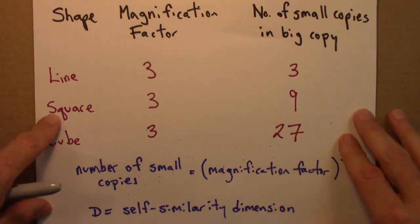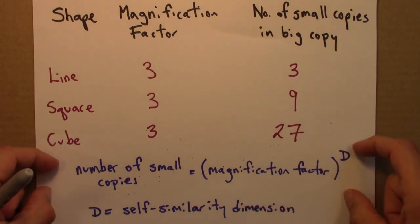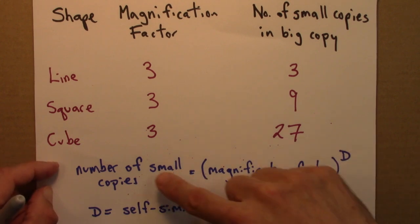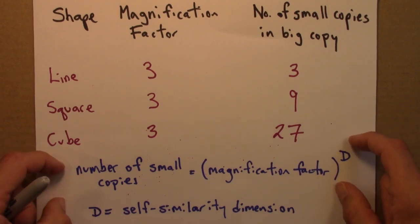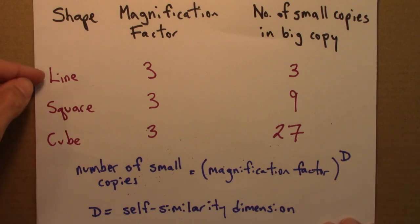So going back to this picture. This is the key equation for this unit. Magnification factor to the d is the number of small copies. And d is a dimension. This is maybe an unusual way of thinking about dimension. But it does tell us that lines are one dimensional. Squares are two dimensional. And cubes are three dimensional. Like we would expect.